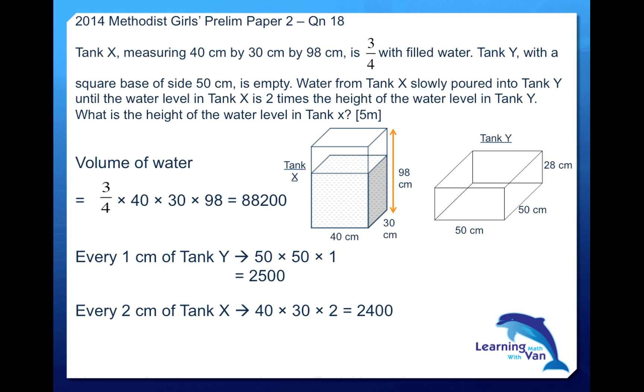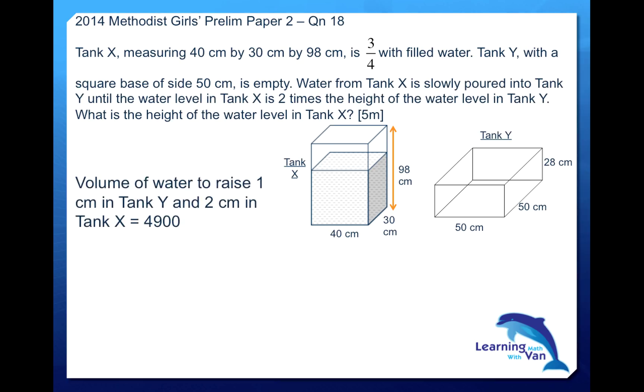So what is the total volume of water that is needed to raise 1 centimeter in Tank Y and 2 centimeters in Tank X? Add them together and they'll give us 4,900 centimeter cubed. This is the volume of water to raise 1 centimeter in Tank Y and 2 centimeters in Tank X.